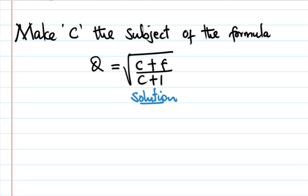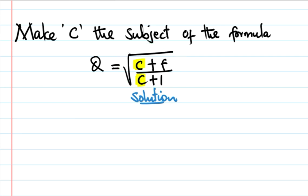So to make C the subject of the formula, you can see what happened. Since it's a square root, you can use the power to both sides.